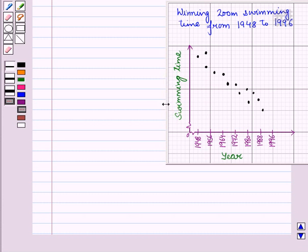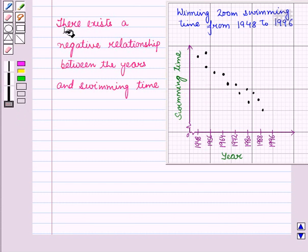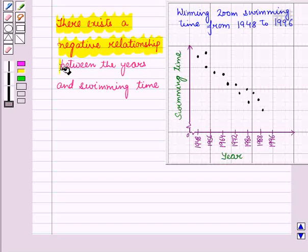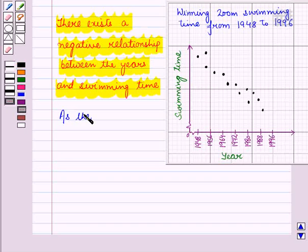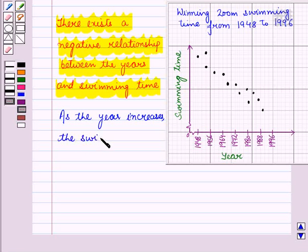And here we can see that each passing year, the swimming time decreases. So we can write that there exists a negative relationship between the years and swimming time. As the year increases, the swimming time of athletes decreases.